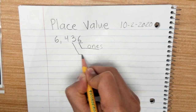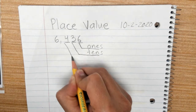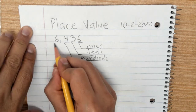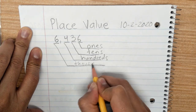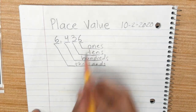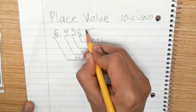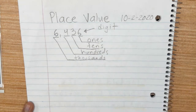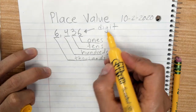This is the ones place, this is the tens place, this is the hundreds place, and the last one here is the thousands place. Each number is called a digit — each one of those numbers is called a digit. I'm going to highlight that as well. Each one of these is called a digit.